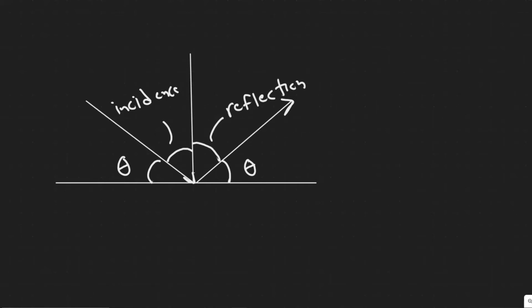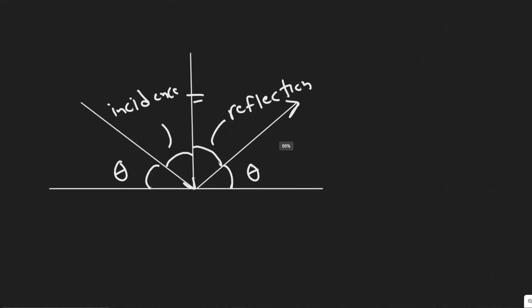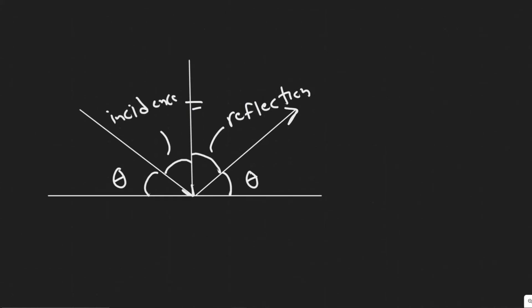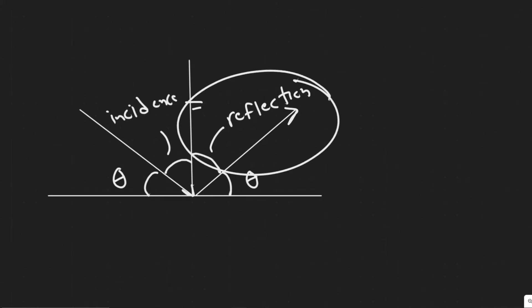Since these two angles — the angle of incidence and the angle of reflection — are equal to each other, and both add up to 90 degrees with the normal, the angles between the ray and the surface itself must also be the same. That's basically what the law of reflection tells us: the angle of incidence equals the angle of reflection.